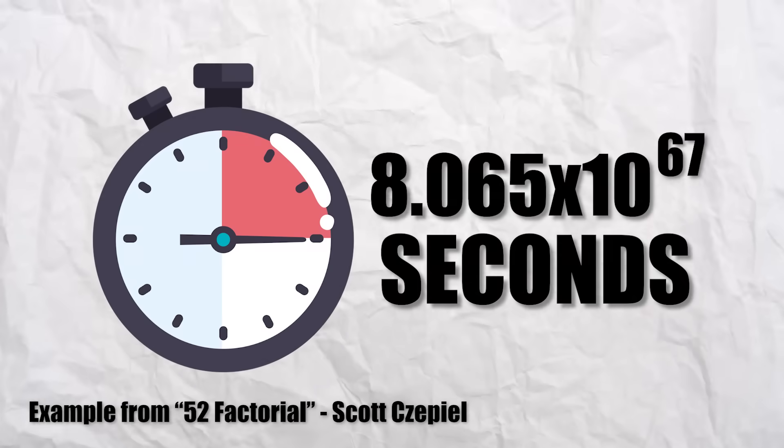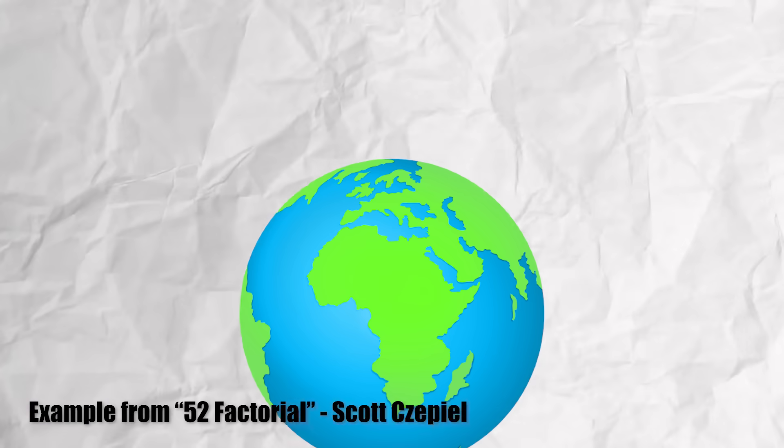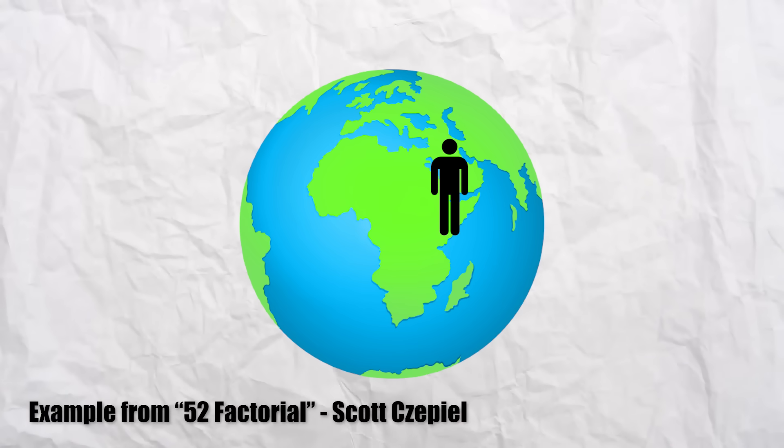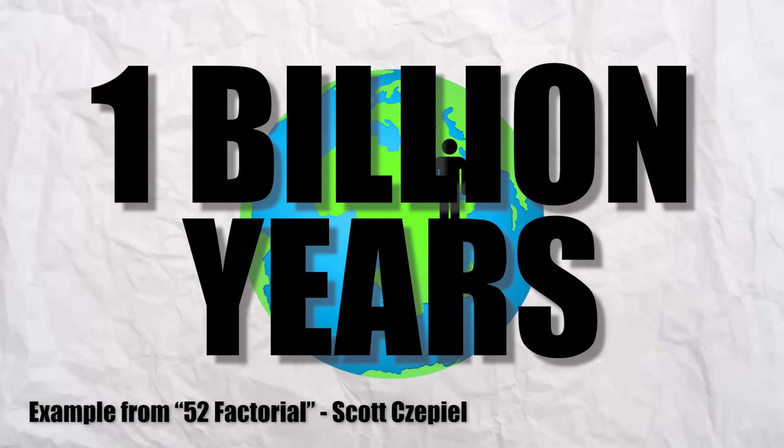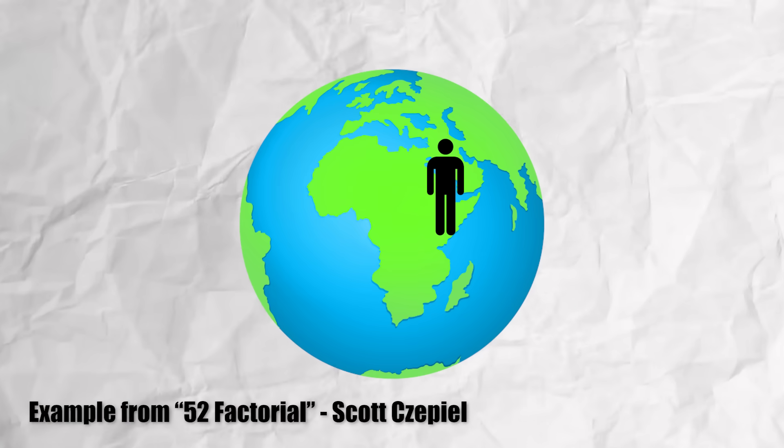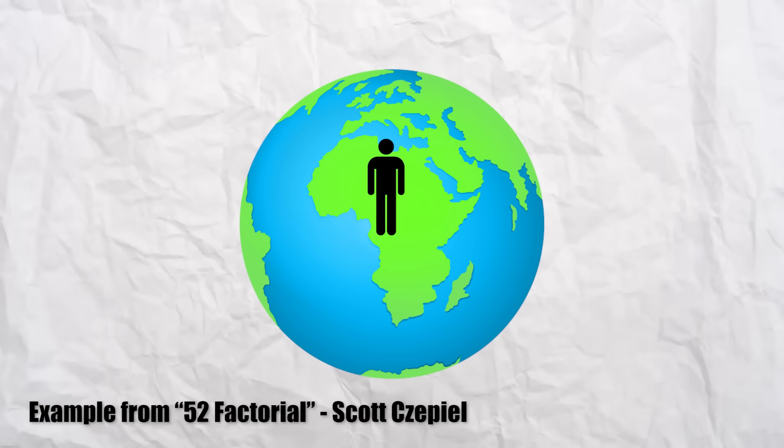I want you to set a timer for 52 factorial seconds, and select your favorite spot on the equator. I'm going with Sydney, Australia. Standing at that point, wait 1 billion years, then take a step forward. Wait another billion years before your next step, and so on.